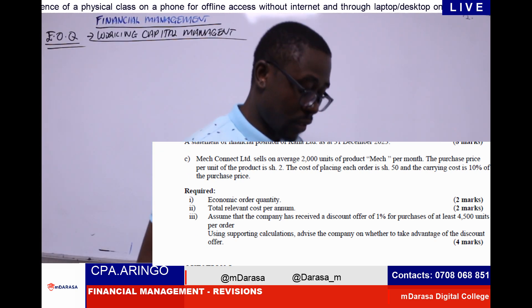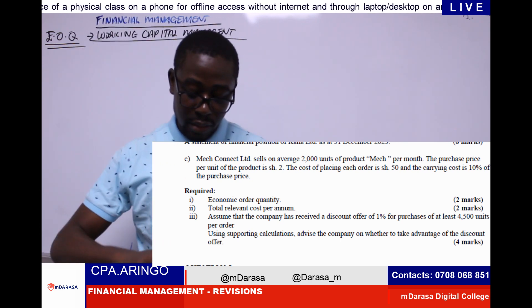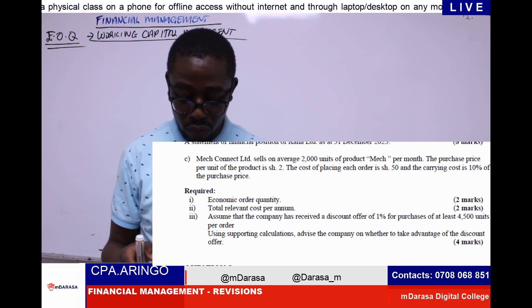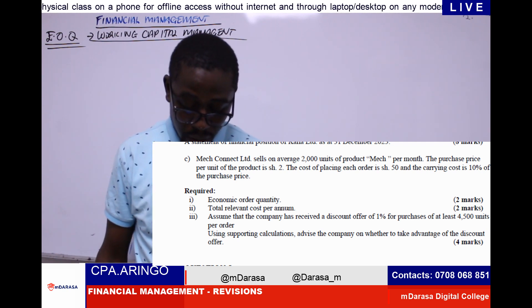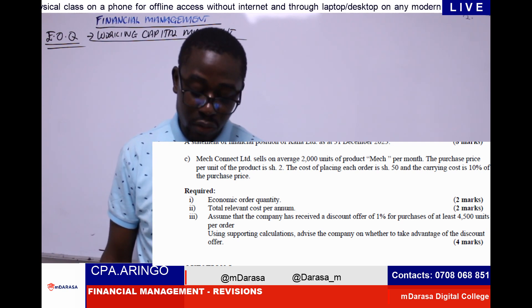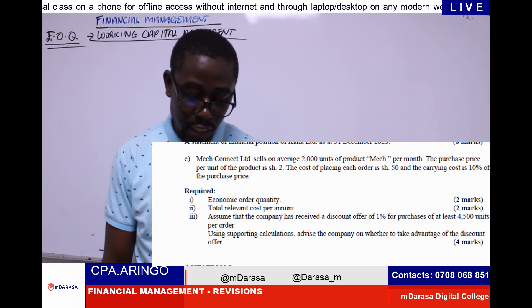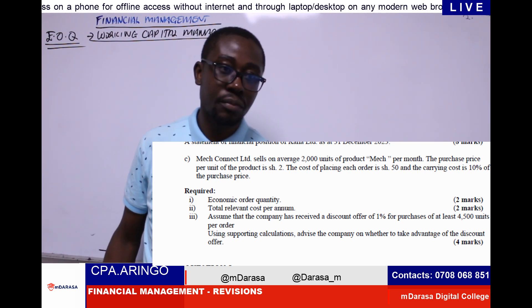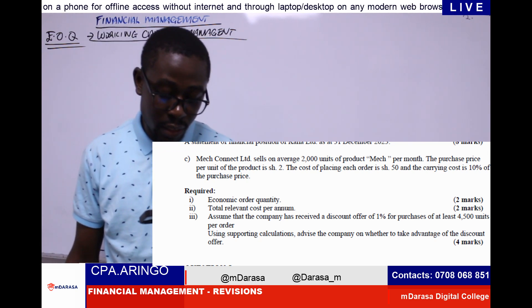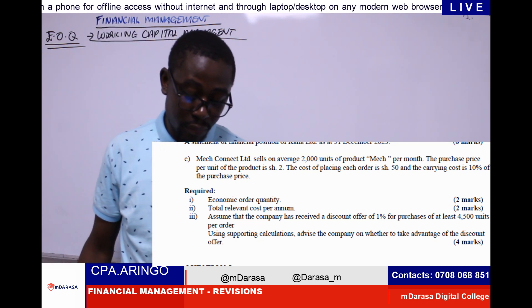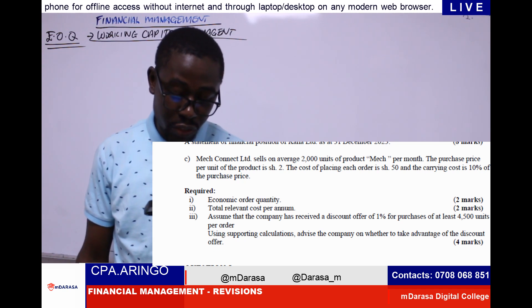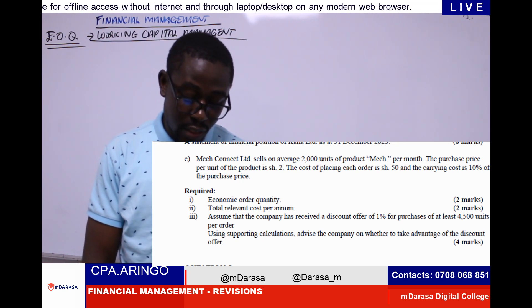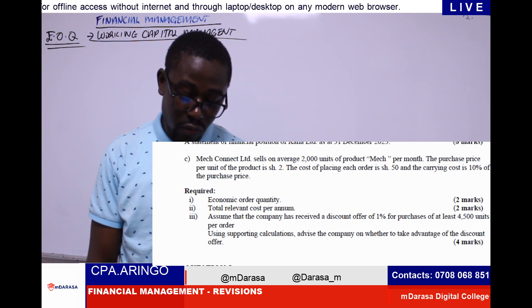In this question, you are told that MEC Connect Limited sells on average 2,000 units of product MEC per month. The purchase price per unit of product is 2, the cost of placing each order is 50, and carrying cost is 10% of the purchase price. Required: number one, EOQ — economic order quantity; number two, total relevant cost per annum; and number three, assume the company has received a discount offer of 1% for purchase of at least 4,500 units per order.